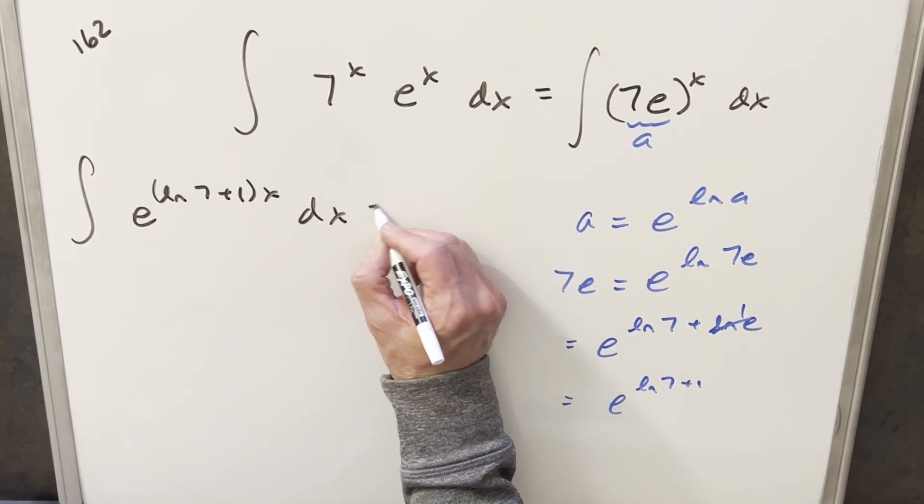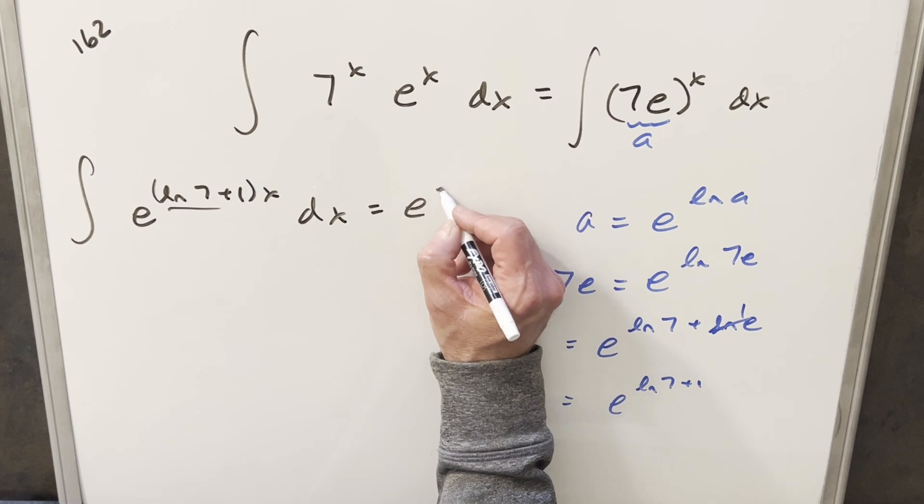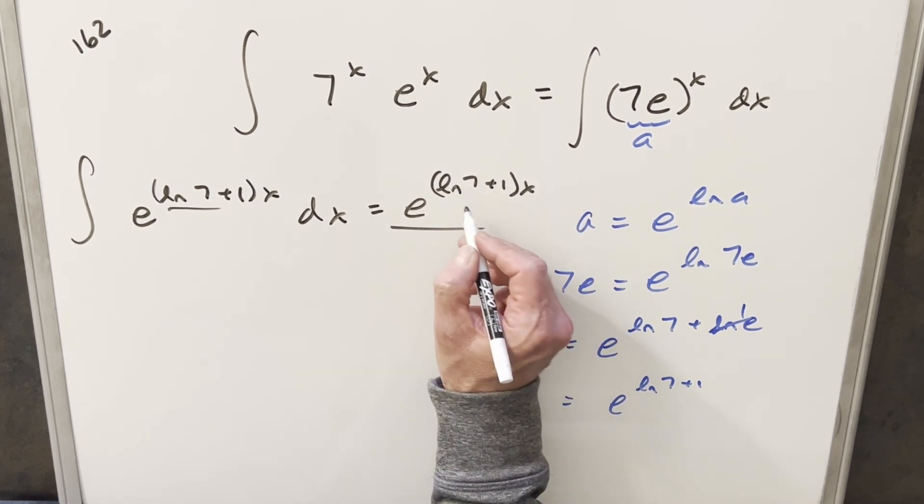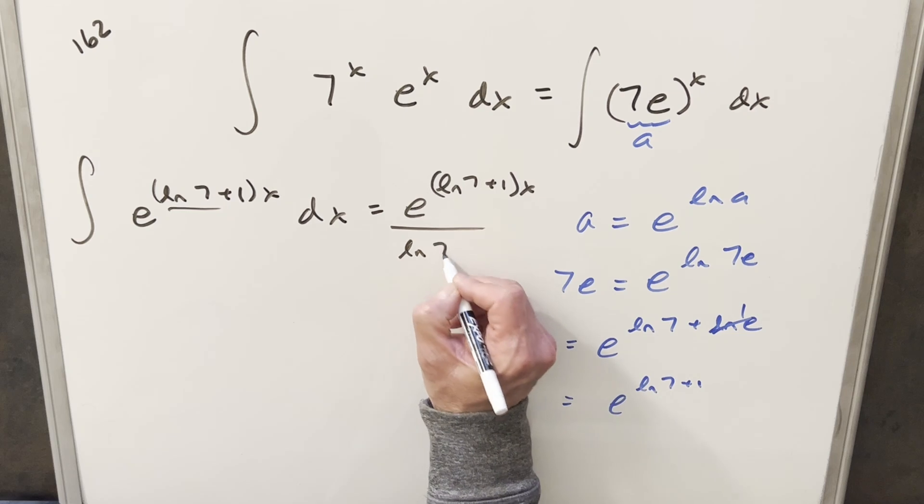We can go ahead and integrate. This is just a constant here, so I can integrate this as e to the ln 7 plus 1 times x, over the constant, which is ln 7 plus 1.